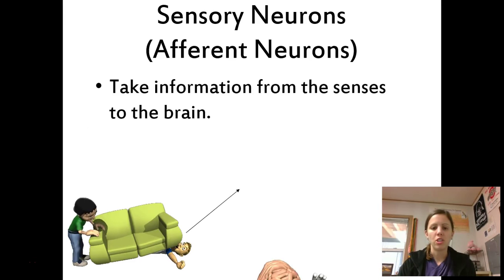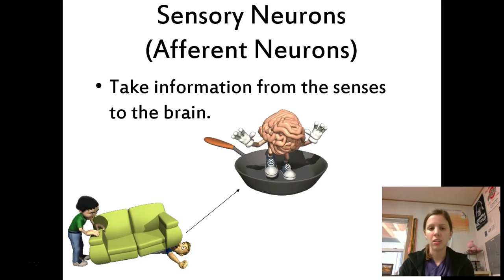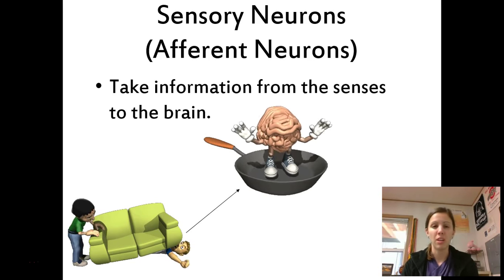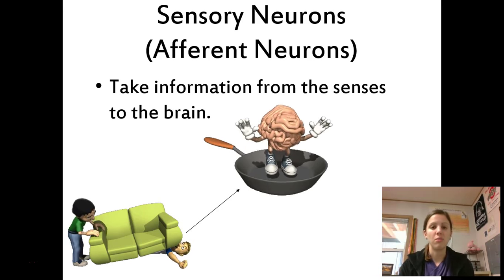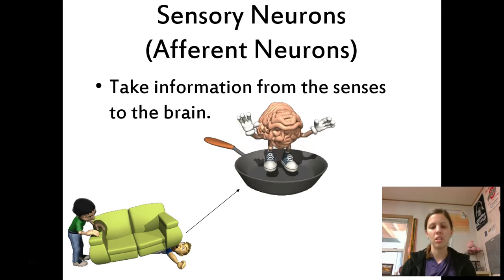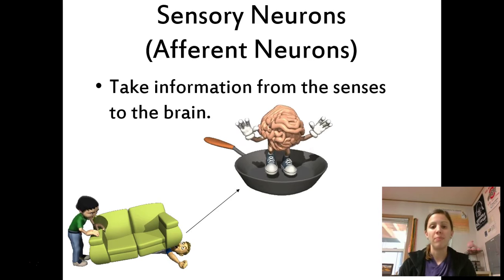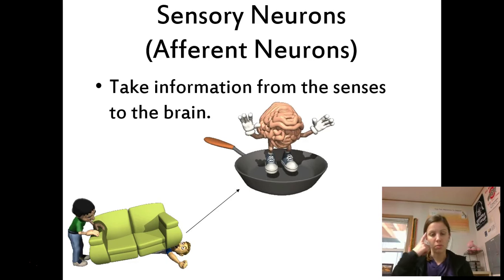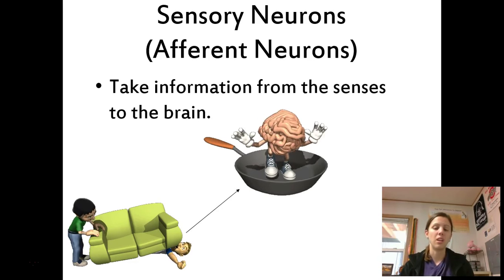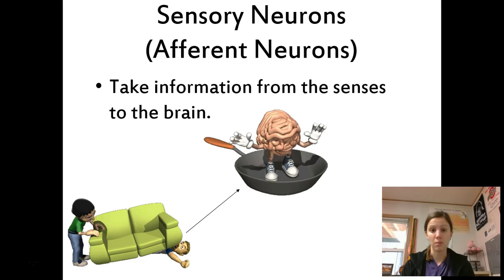First, sensory neurons — also known as afferent neurons. You need to be familiar with both names; in fact, you'll probably see 'afferent' more on the AP test than 'sensory.' Essentially, these neurons take information from your senses to your brain. The example I used earlier — if I stub my toe, the neurons that take that information to my brain — those are sensory neurons because the signal comes from my senses.